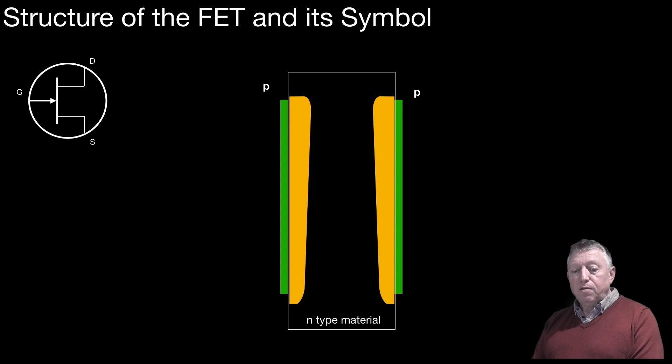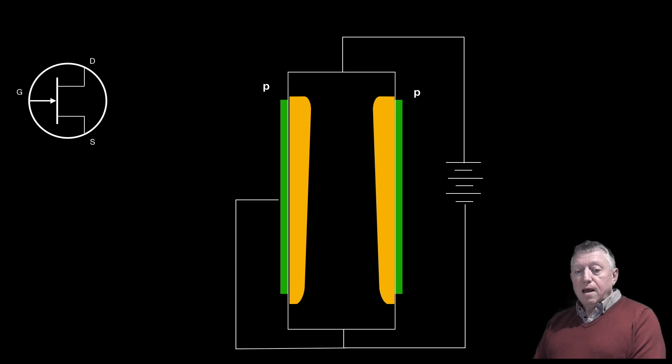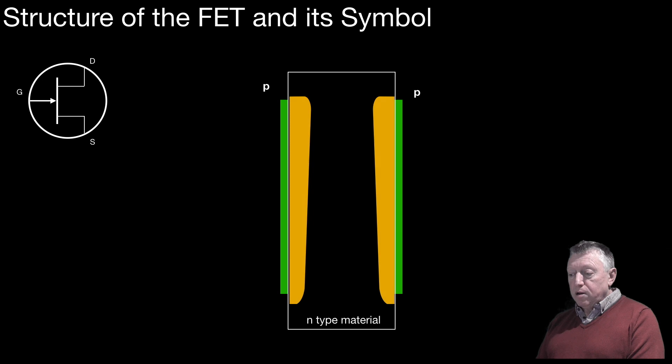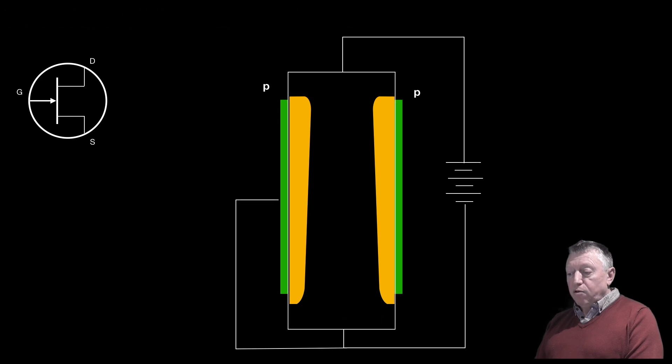If we put a circuit around the FET and we go from source to drain, thus we will get current flowing through the FET. We'll show that again. We put the depletion layers there and put a circuit on and we can see the electrons that are then able to flow easily from the source through to the drain.